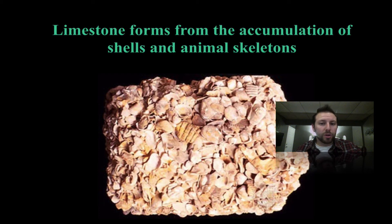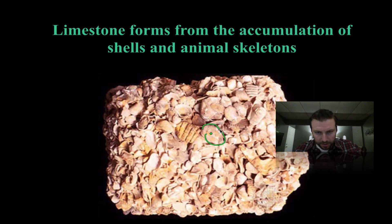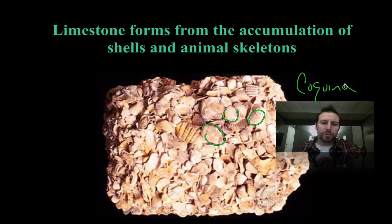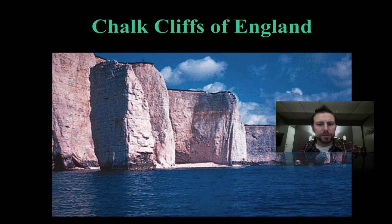Limestone forms from the accumulation of shells and animal skeletons. In this picture we can see all of these shells — this is actually coquina, another example of a bioclastic sedimentary rock, sometimes used interchangeably with limestone. The chalk cliffs of England are also formed from shell remains.